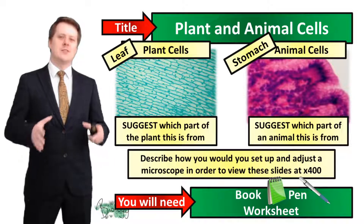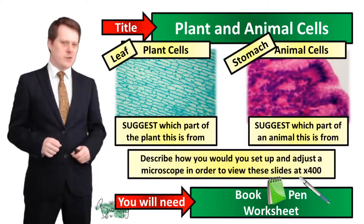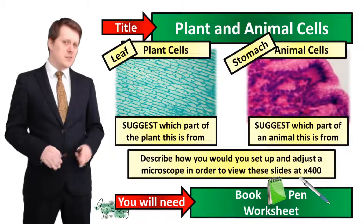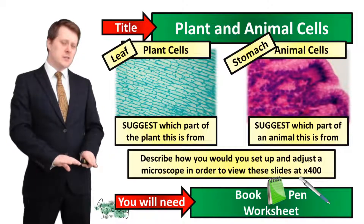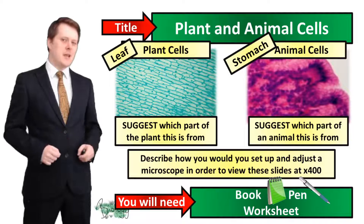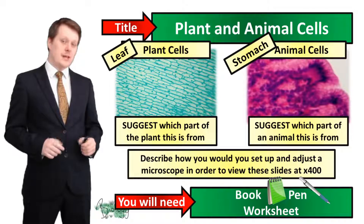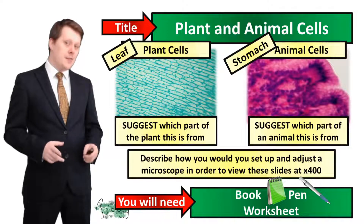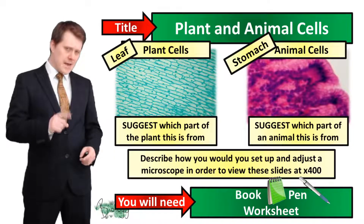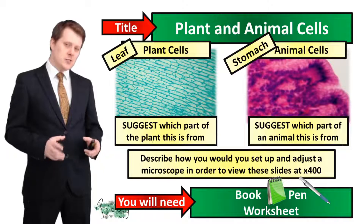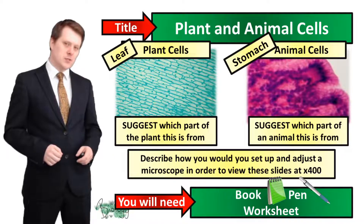Describing how you would set up and adjust the microscope in order to view these slides: first you'd get your stage and you'd put it into the lowest position. Then you would insert your slide and secure it into place. You would then choose your objective lens with the smallest magnification, usually a times 4. And then while looking down the microscope you would begin to raise the stage up until the image came into focus.